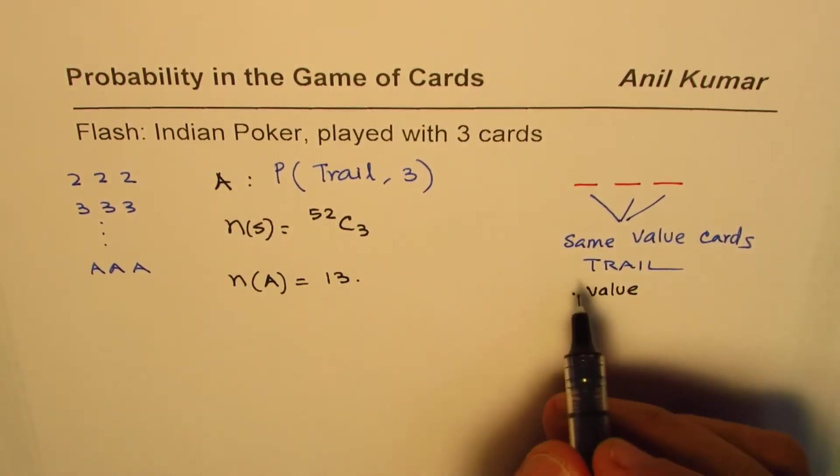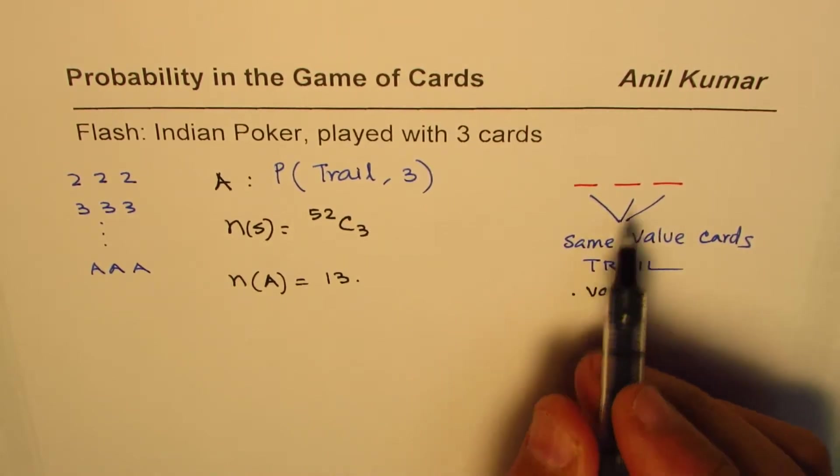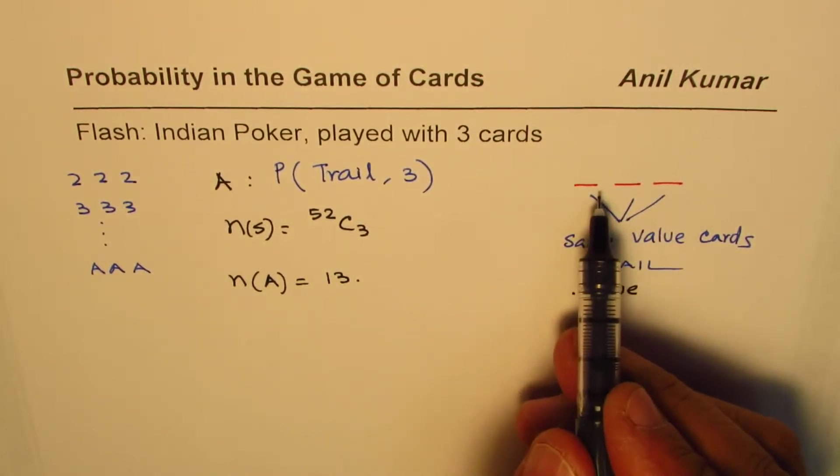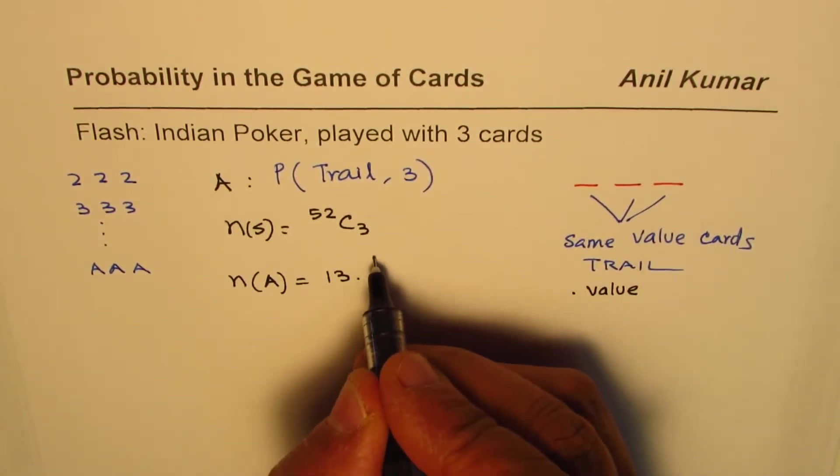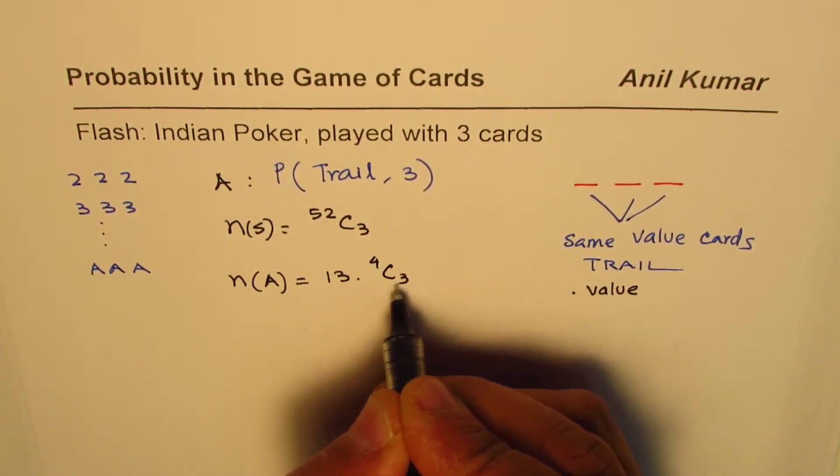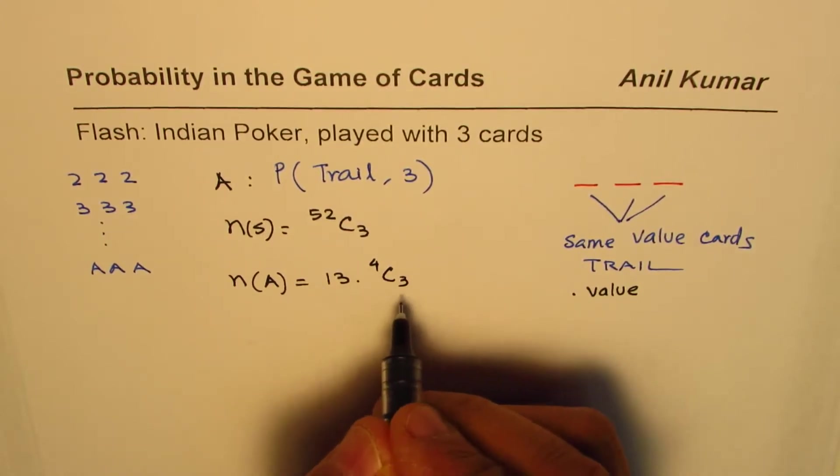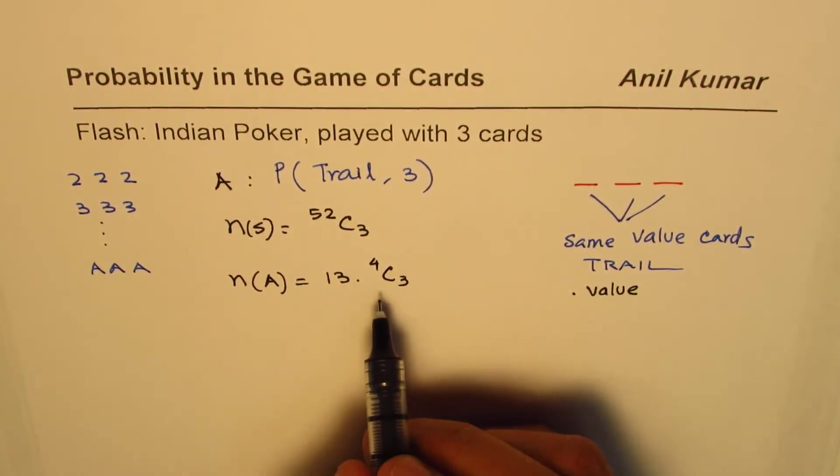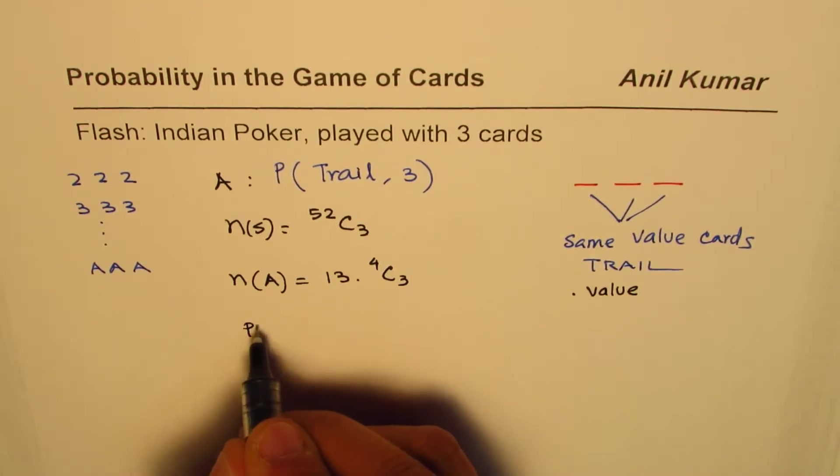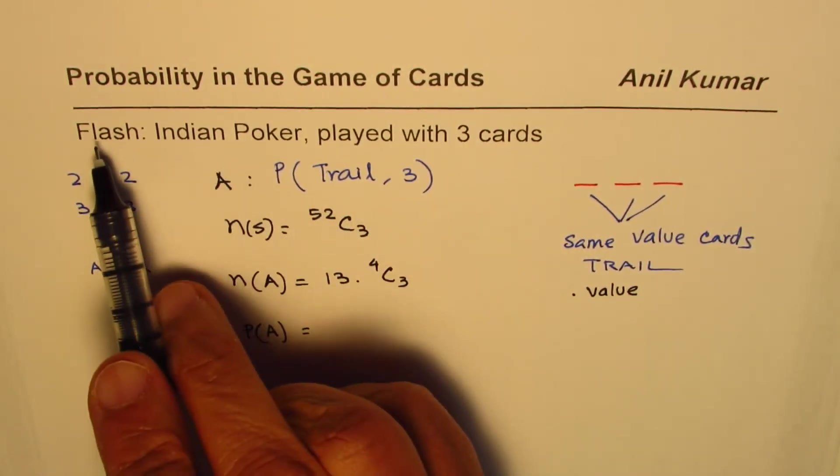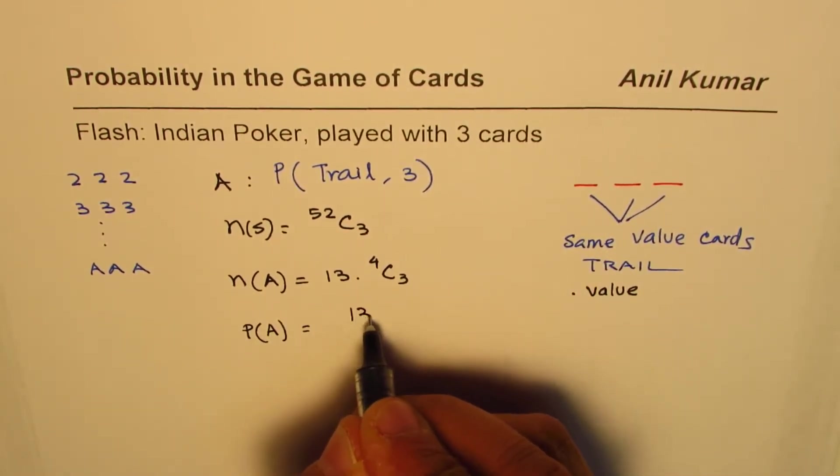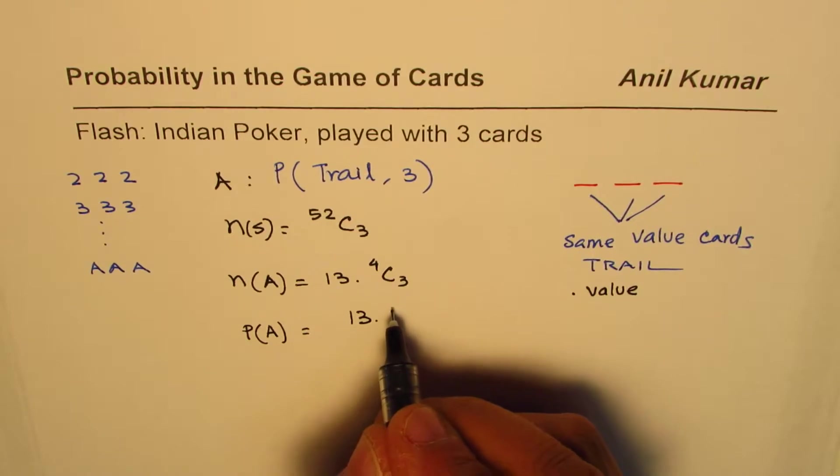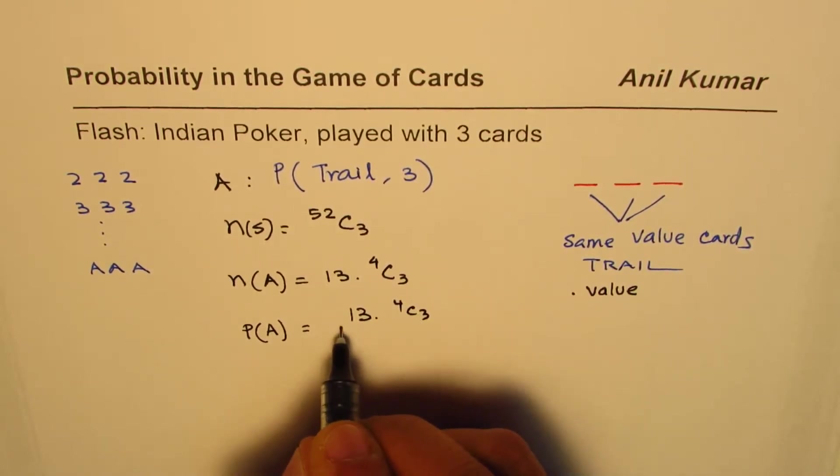Once we decide which one, we are choosing three out of four because there are four suits. So you are selecting out of four only three cards, and that becomes the favorable number of chances to get a trail. The probability for event A of getting trail in the game of flash where three cards are being distributed is the ratio of these two: 13 times 4C3 divided by 52C3.